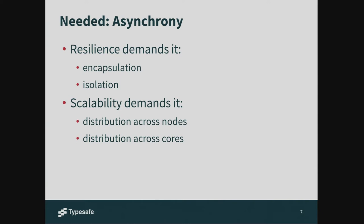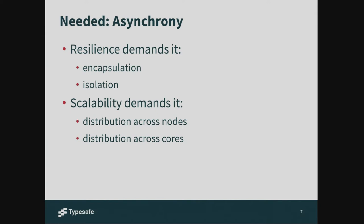The same goes for scalability. If you can't handle the load on a single system, you need to distribute it. You can scale up across multiple cores, but at some point you need to switch to scaling out. That means data must cross asynchronous boundaries. In a reactive application there are several kinds of asynchronous boundaries, which play a crucial role in the motivation behind reactive streams.